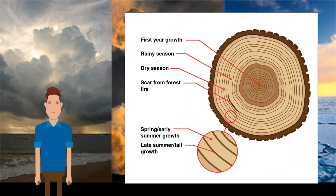Tree rings can also be used to reconstruct past climates. Each year a tree gains another ring when it grows; if a ring is larger it means the tree grew more that year. Scientists can use tree rings to work out when temperatures were more favorable for growth — for instance, warmer and wetter. Although most trees only last a few hundred years, data from the distant past can be gathered using fossilized tree trunks preserved in, for example, peat bogs.